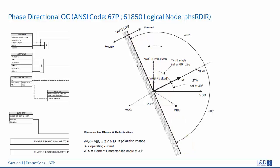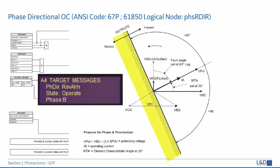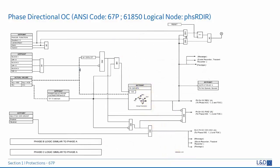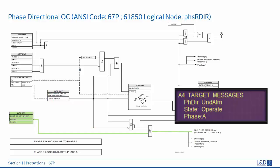When the operation comparator is based on operating current and polarizing line-to-line voltage and MTA, with MTA set to the default 30 degrees, the forward region for phase A current angle will be 330 degrees to 150 degrees lagging. The reverse direction will be 150 degrees to 330 degrees lagging. When phase directional block OC undefined is enabled and VT voltage is below minimum supervision level, the block phase OC directional undefined operand will be asserted.